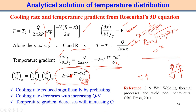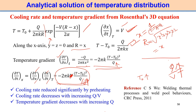Accordingly, we can design the welding process by simply looking into the analytical solution of the temperature distribution for the fusion welding process. Now, another aspect is the heat transfer efficiency associated with the fusion welding process. There are two efficiencies: thermal efficiency and melting efficiency.